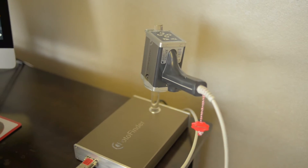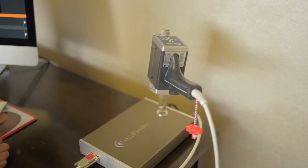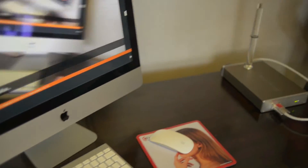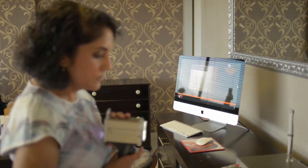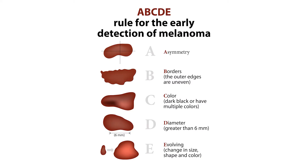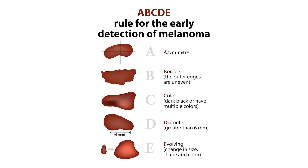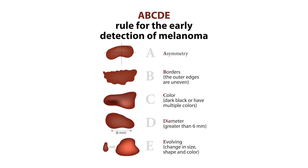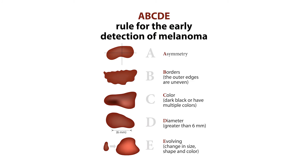When you examine a patient, especially if they are what I call my 'moley patient', you have to make sure that you're not going to miss a melanoma. So you look at what we call the ABCDE classification, which looks at the asymmetry, the border, the color, the dimensions or the diameter, and the evolution or the change of the mole.